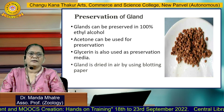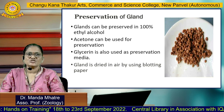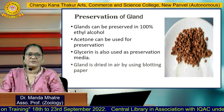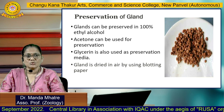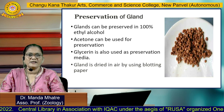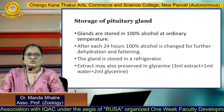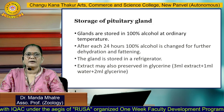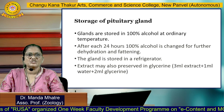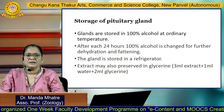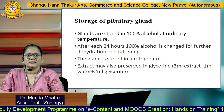Preservation of the pituitary gland: glands can be preserved in 100% ethyl alcohol. Acetone can also be used for preservation. Glycerin is also used as a preservation medium. The gland is air-dried using blotting paper. Glands are stored in 100 ml of alcohol at ordinary temperature. After each 24 hours, 100% alcohol is changed for further dehydration and defatting. The gland is stored in a refrigerator. Extract may also be preserved in glycerin, made up with 3 ml of extract, 1 ml of water, and 2 ml of glycerin.